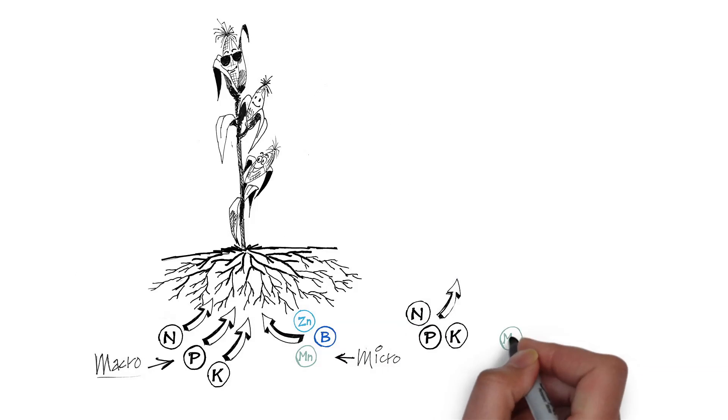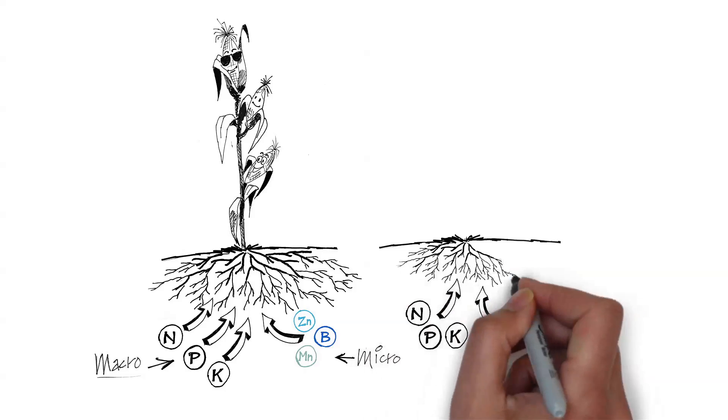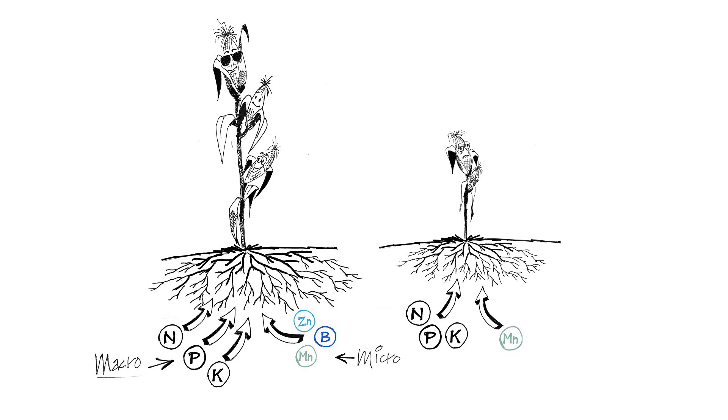If any of these nutrients are lacking, the plant will suffer, and so will the yield and quality of the crop.